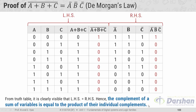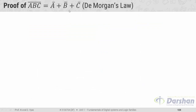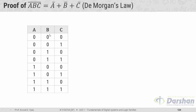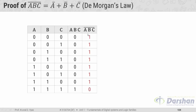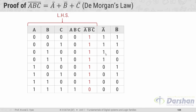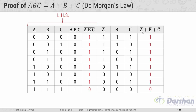The second De Morgan's theorem states: (A·B·C)-bar equals A-bar + B-bar + C-bar. Again using a truth table with three variables and eight combinations: A·B·C equals 1 only when all inputs are 1. Complementing gives the LHS. For the RHS, we construct A-bar, B-bar, and C-bar by complementing each column, then compute A-bar + B-bar + C-bar using an OR gate — the output is 0 only when all complements are 0.